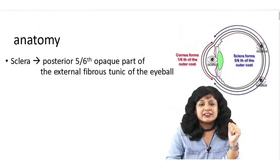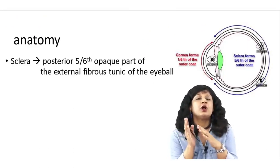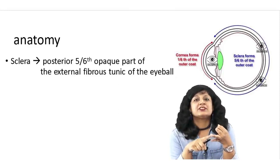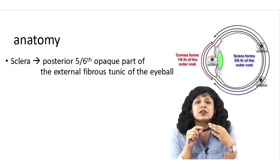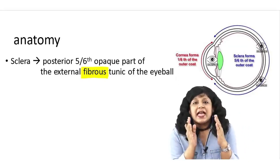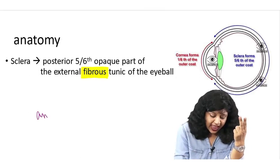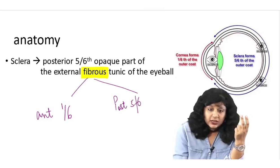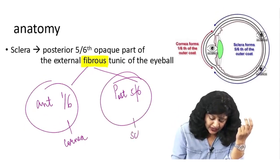I'll start first with the anatomy of the sclera. The eyeball has three coats or three tunics: the outer coat is the fibrous coat, the middle coat is the vascular coat, and the inner coat is the nervous coat. Here we are talking about the fibrous coat, the outermost coat of the eyeball, which can be divided into two parts: the anterior one-sixth and the posterior five-sixth. The anterior one-sixth is your cornea and the posterior five-sixth is the sclera.